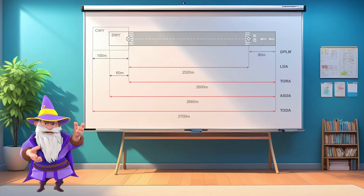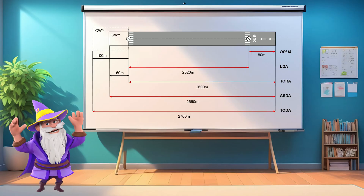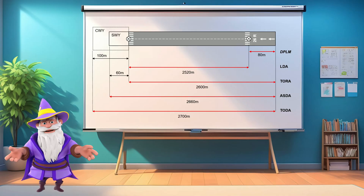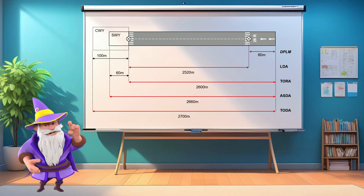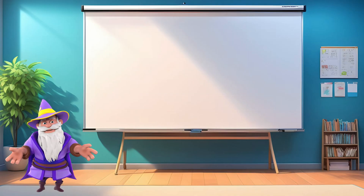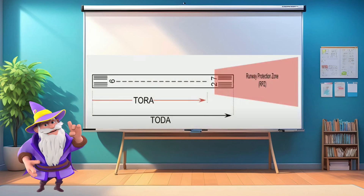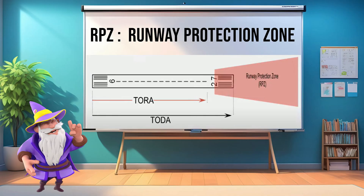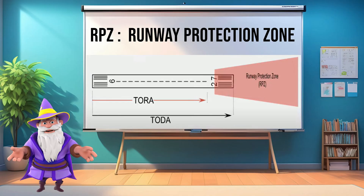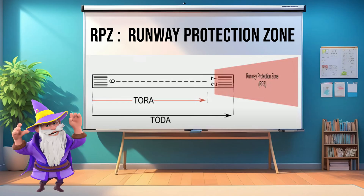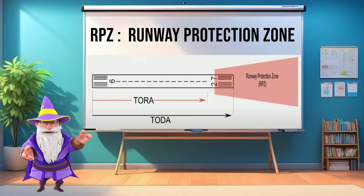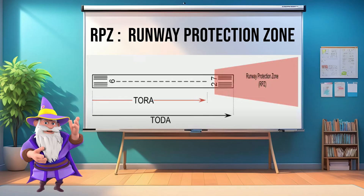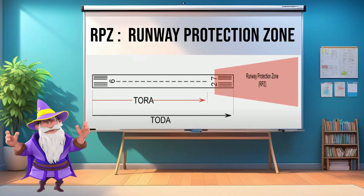Now that we have all runway physical distances — TORA, TODA, ASDA, LDA — let's ask some questions. For example, can we have a TORA shorter than the physical length of the runway? Well, yes. Many runways have a runway protection zone, a trapezoidal area that extends beyond the end of a runway to minimize risks in the event of an aircraft undershooting or overrunning the runway. Unlike clearways or stopways, the RPZ is not part of the declared distances. It's strictly a safety buffer that remains clear of buildings, roads, and other obstructions whenever possible.